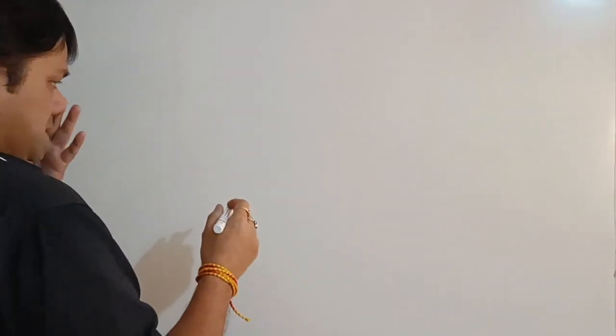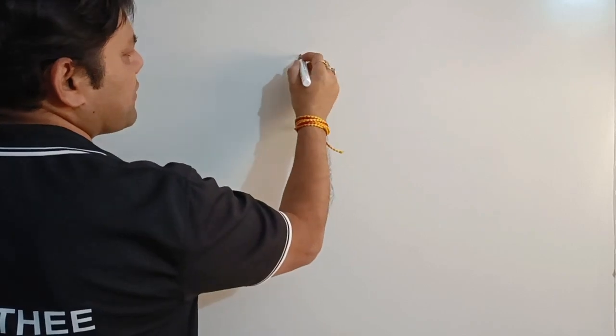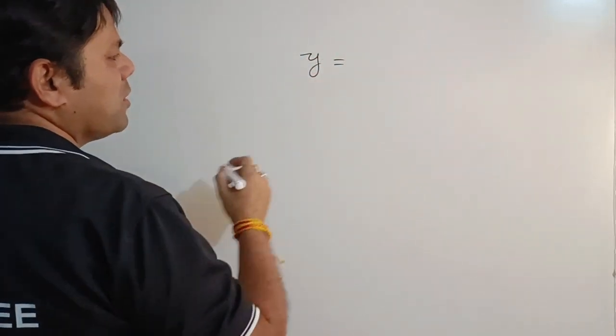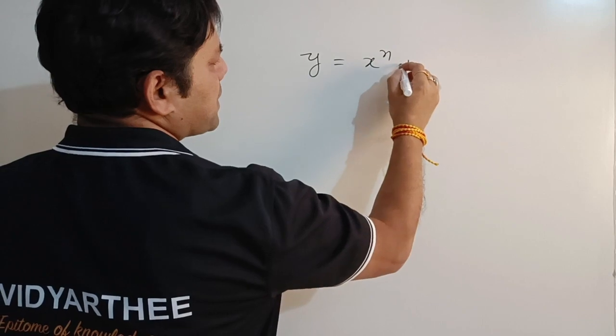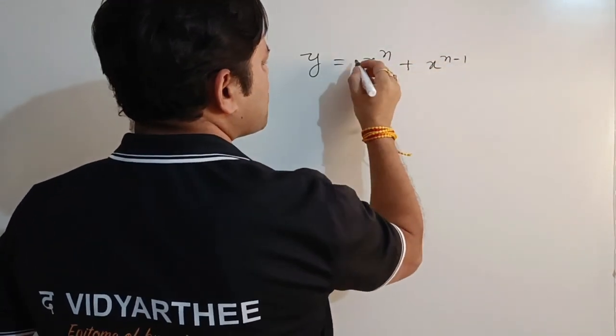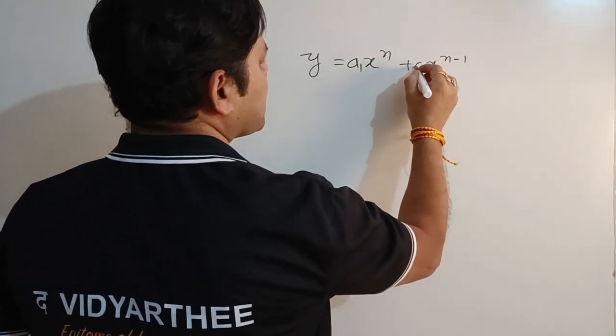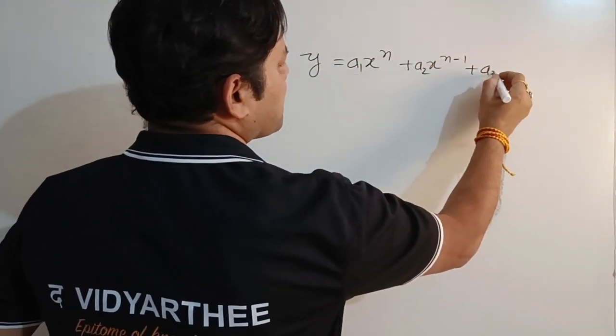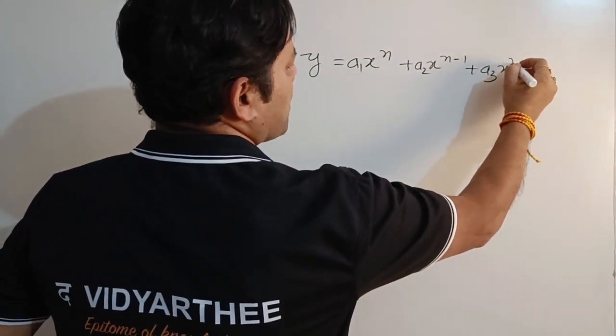In derivatives we will see all the types of derivatives in one class. We will start with the basic derivation. If we have y in the form of x to the power n plus x to the power n minus 1, you can take a coefficient a1 here, a2 here, and a3 x to the power n minus 2.